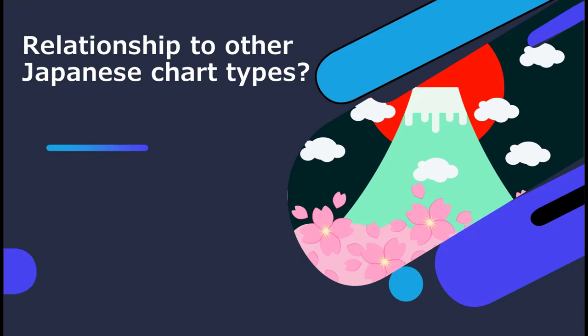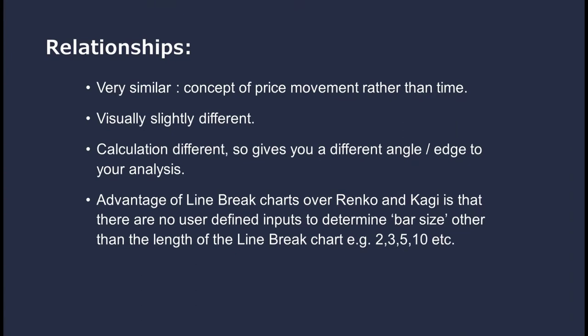Before diving into the depth of how the line break chart works, I want to draw comparisons to other Japanese chart types so we can see what the line break chart is trying to give us in terms of data and presentation. Renko, Kagi, and line break charts are all very similar — they share one big trait, which is the concept of price movement rather than focusing on time. But they are visually slightly different and calculated slightly differently, giving you a different angle or edge.